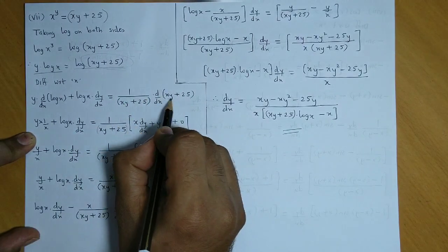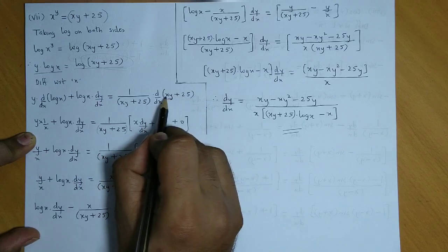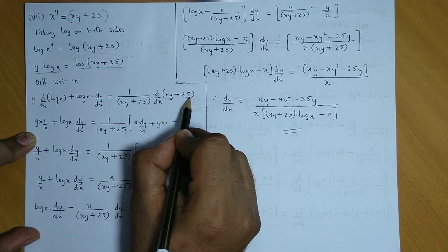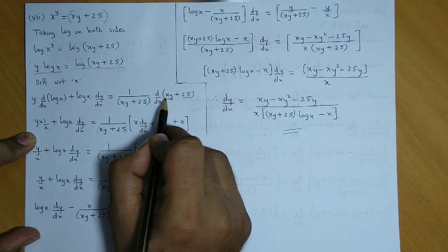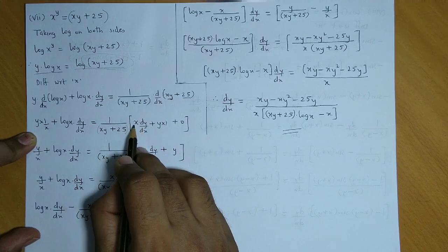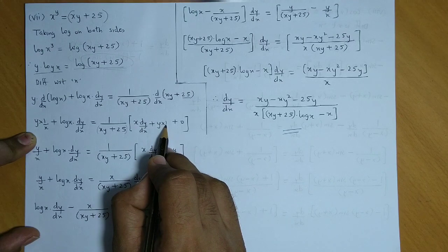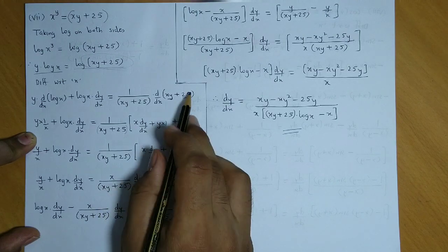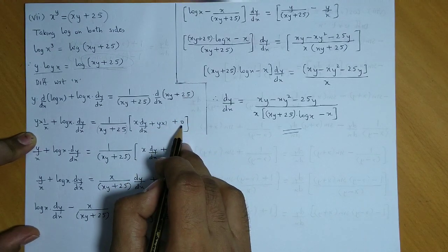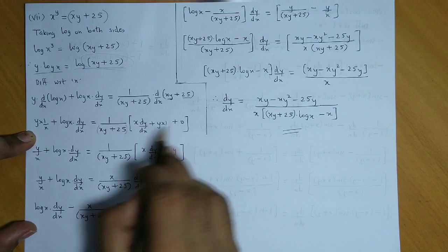Now here in the bracket we see again a product, x into y, and the other is constant. So here we use u into v rule. So we have x into derivative of y plus y into derivative of x, which is 1, plus 25 constant, so its derivative will be 0.